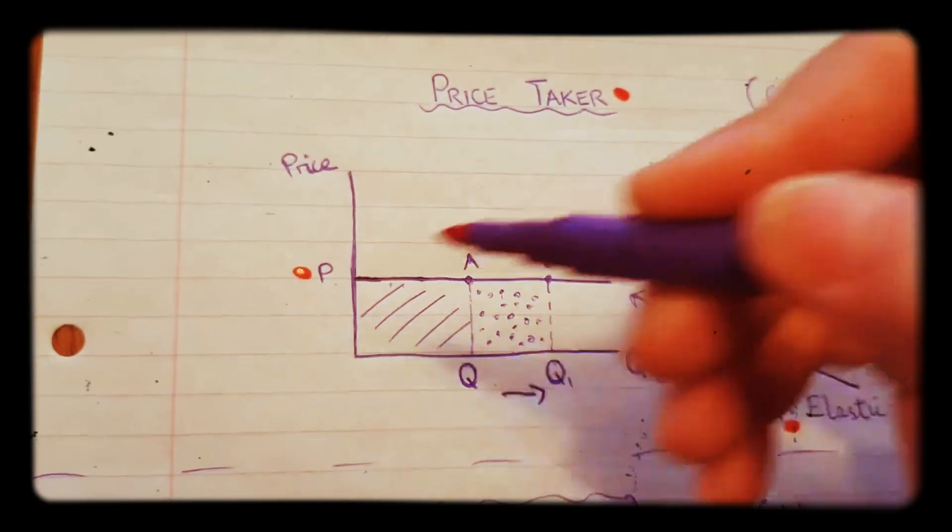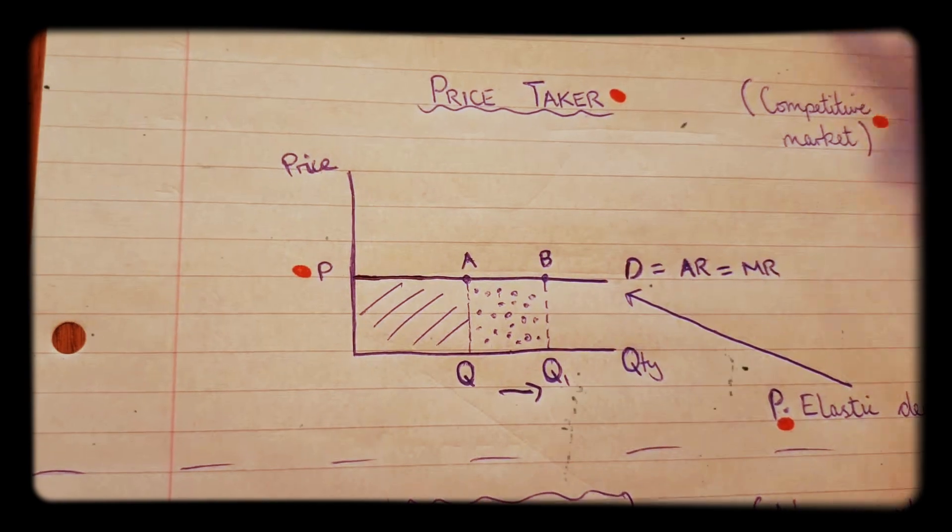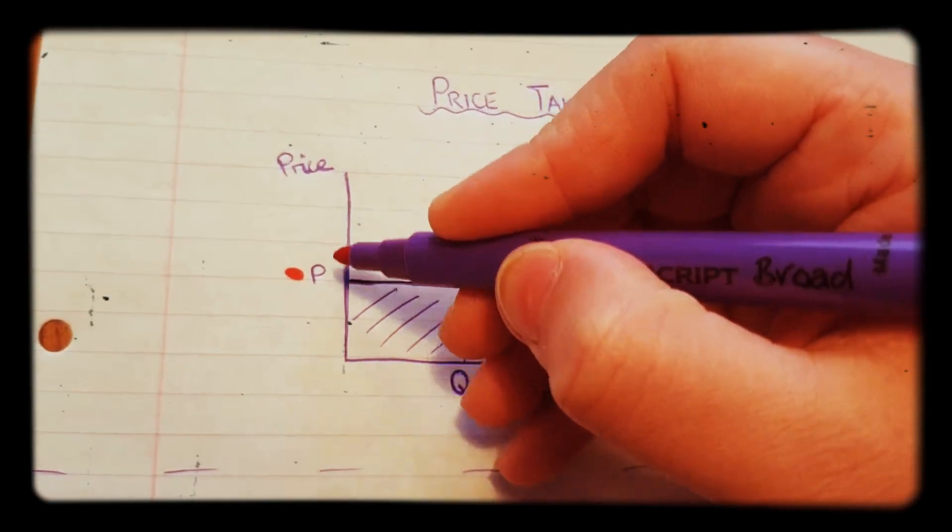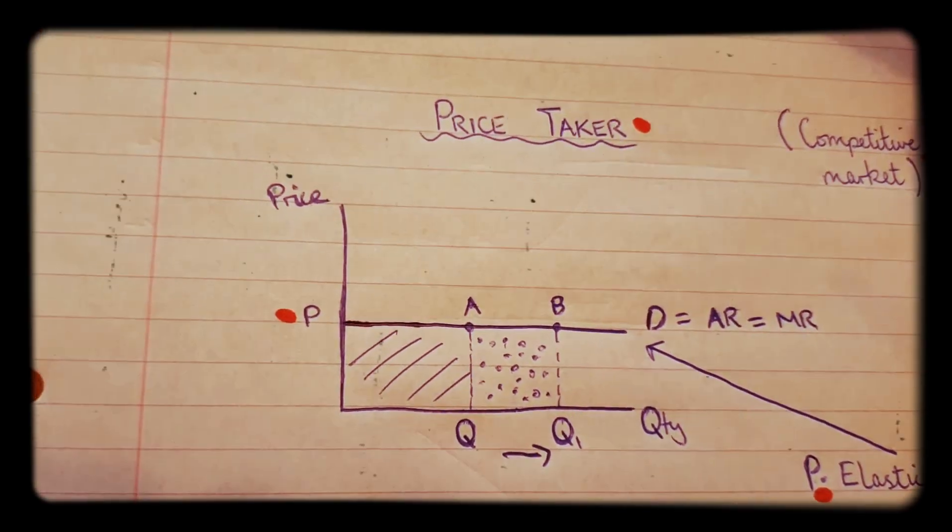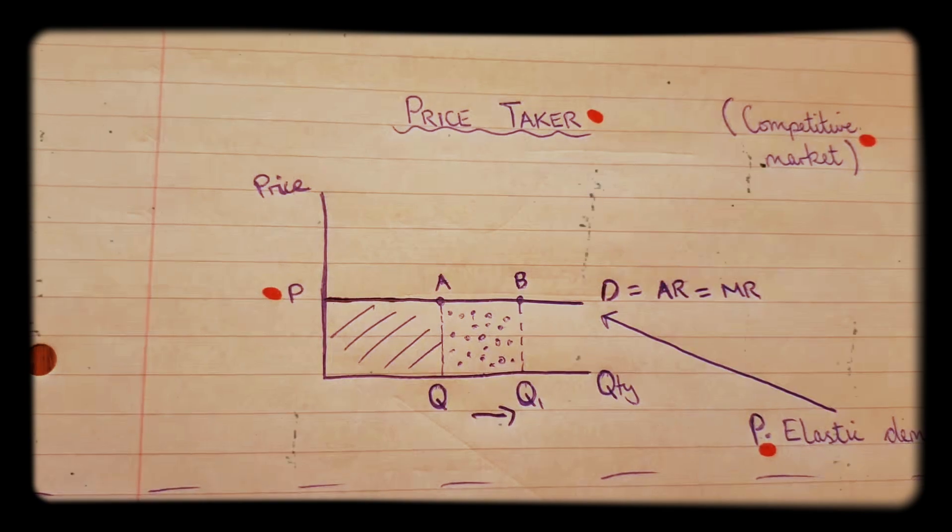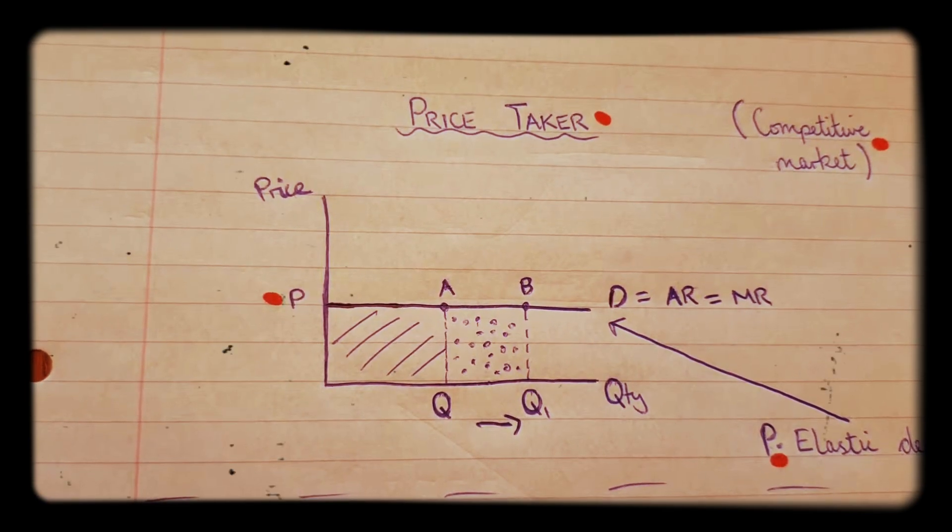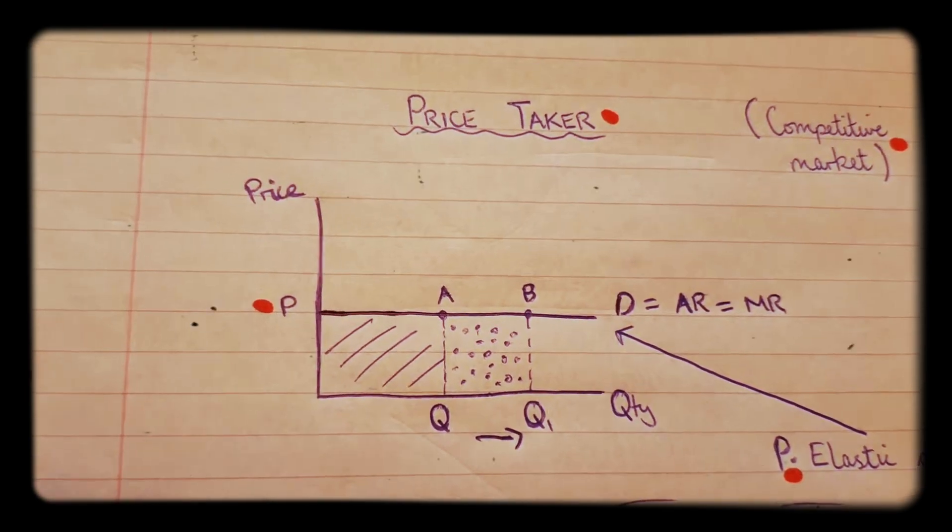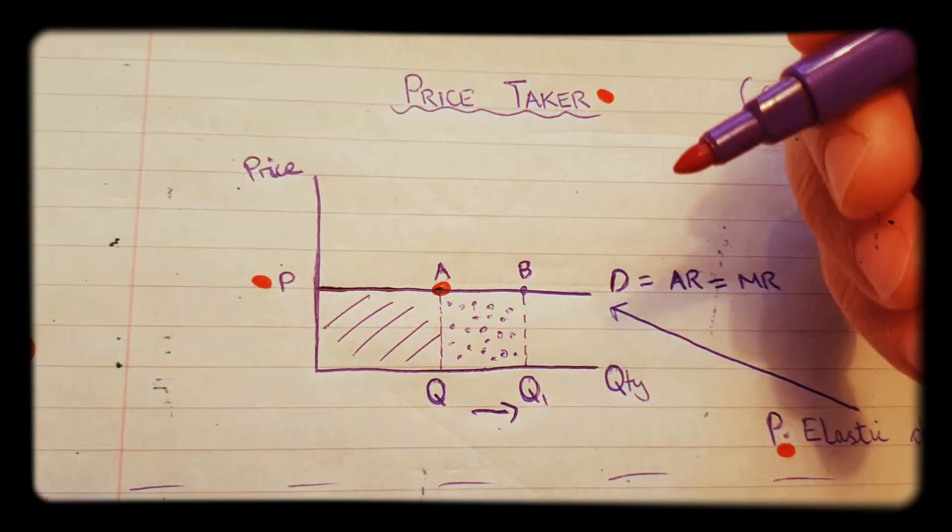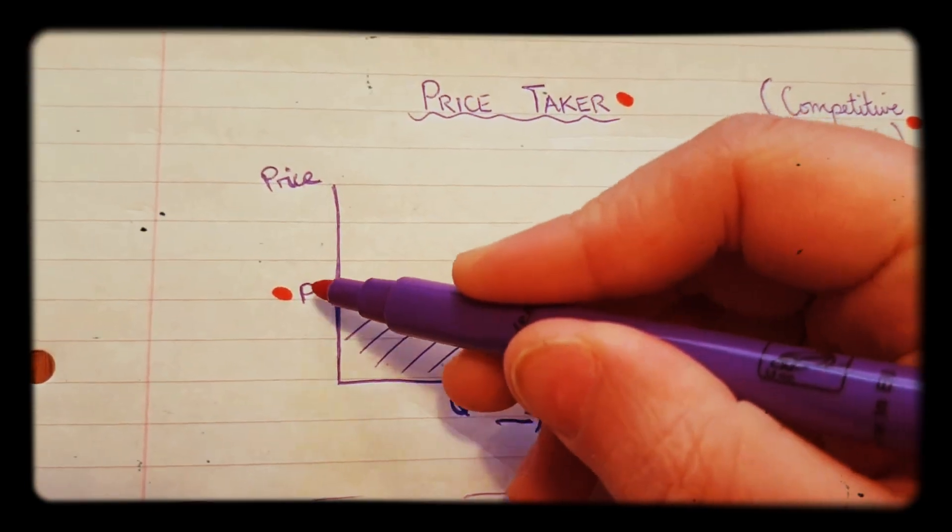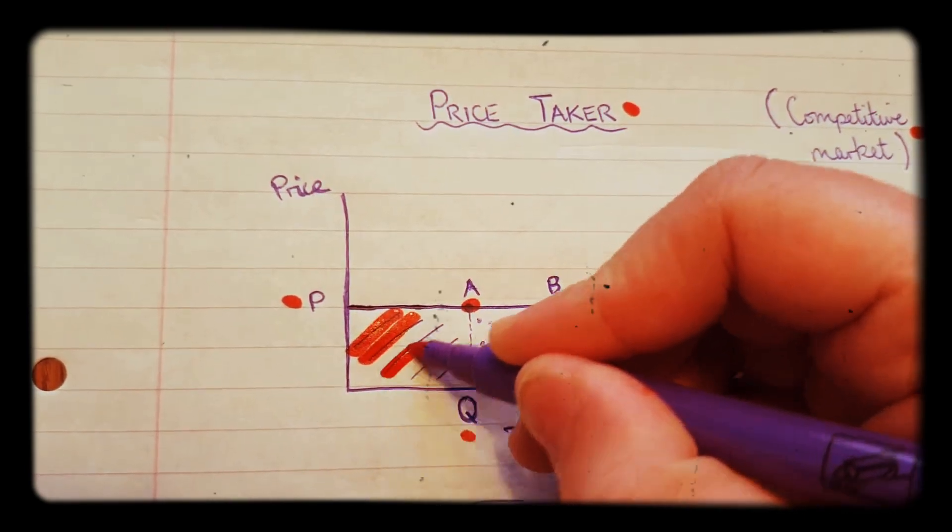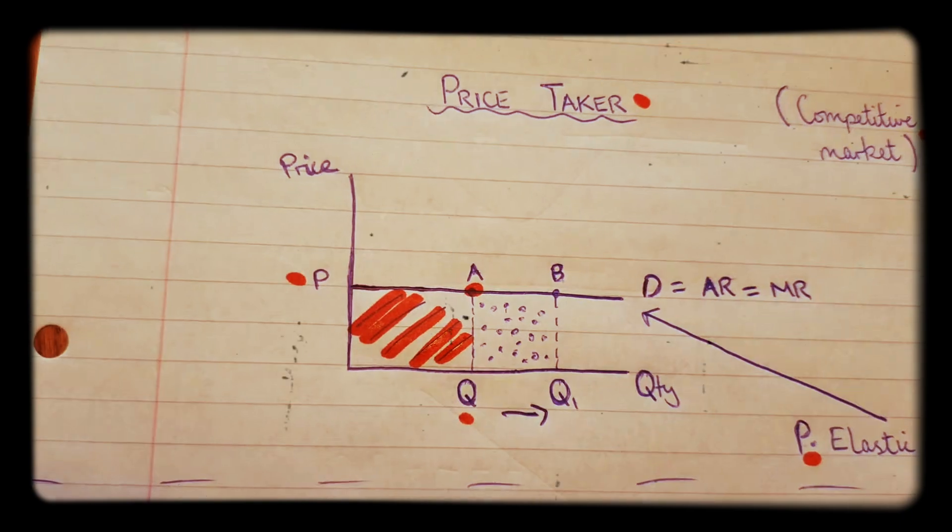The firm has to accept the price in the industry, this price here, price P. If it prices below that it makes no sense. If it prices above that it's going to lose all its customers. So how can we calculate the revenue that is made? Well, just like in the previous video, we do price times quantity. So at point A the revenue that is made is price P times quantity Q, and this here is the revenue that is made.